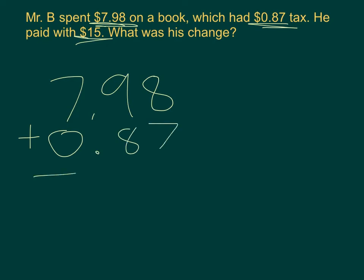So if we add that up, 8 plus 7 is 5, then you carry it, and that would give you 18, you carry it. So the book and the tax together cost $8.85.